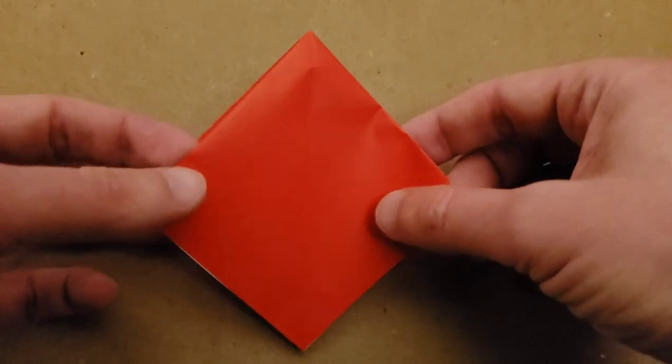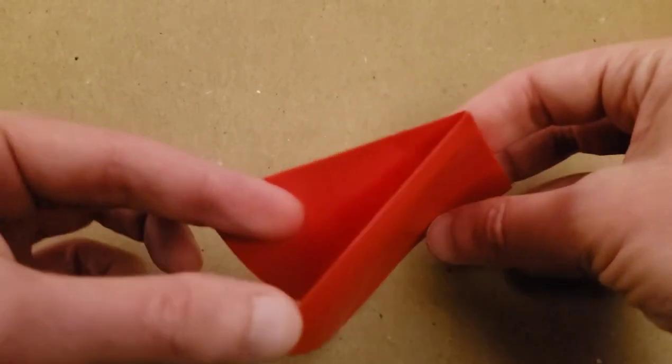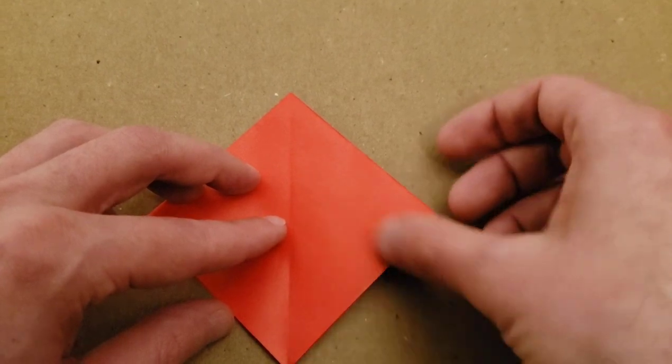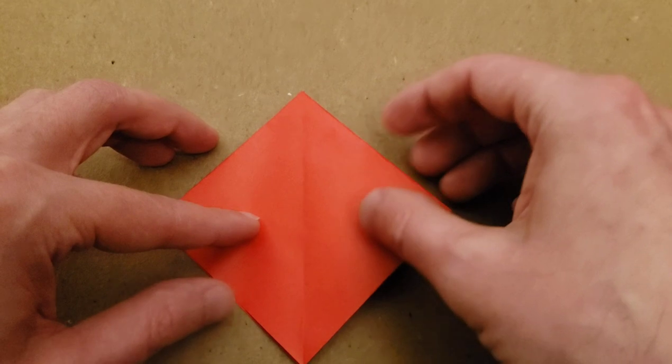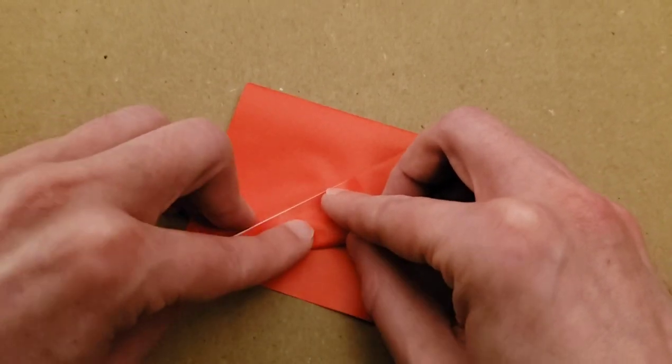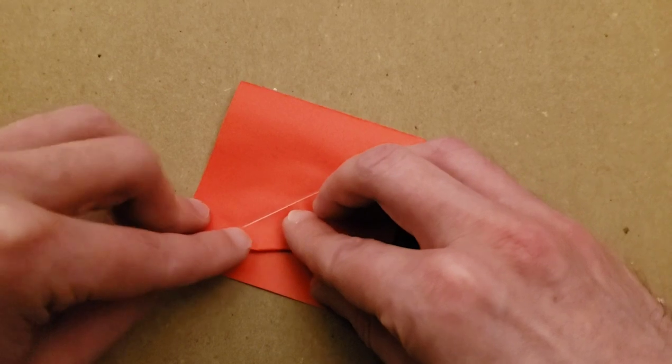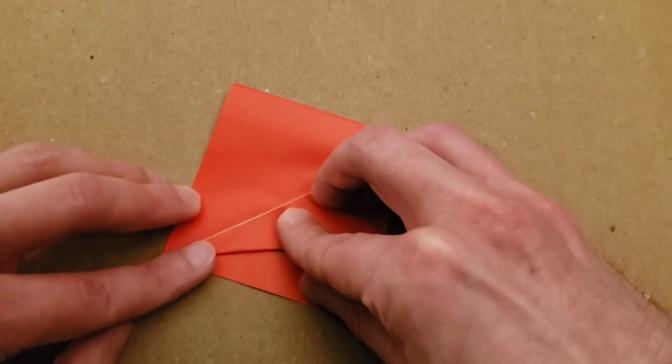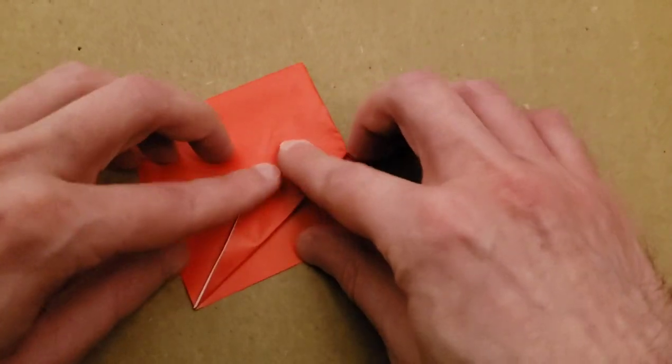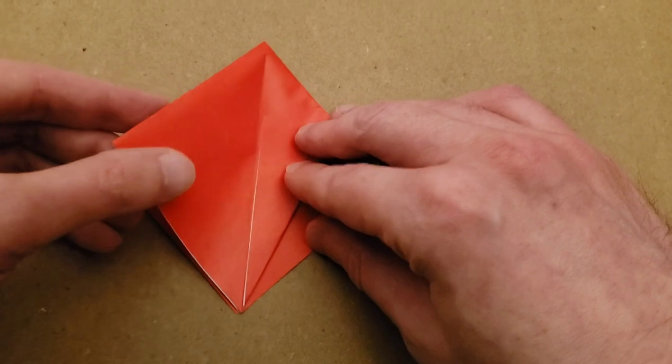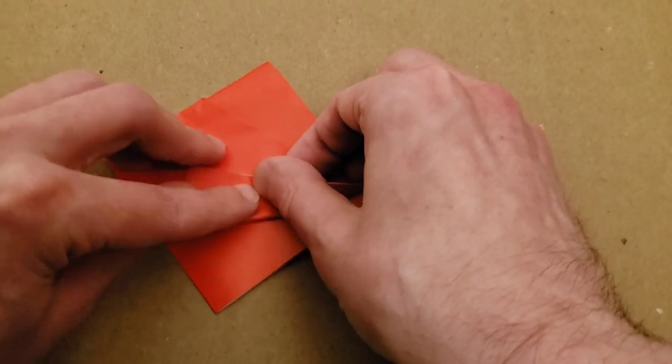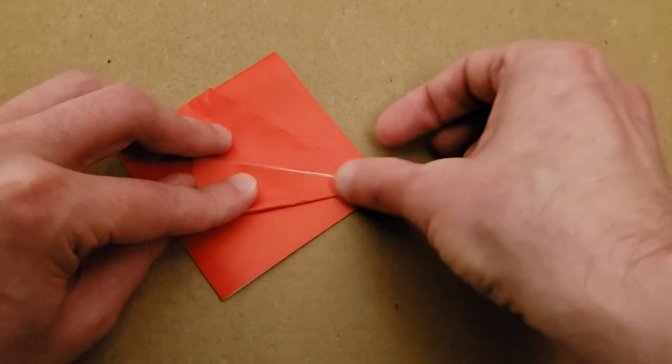From here, we're going to be working with the front flaps. With just the front flaps, these two in front, I'm going to fold this bottom edge to the center, bottom edge to the center, to create sort of like a kite. So I'm going to get that point nice and pointy, like so. And then the other front flap to the center. I find it helps if you turn your work to sort of orient yourself a little bit better.